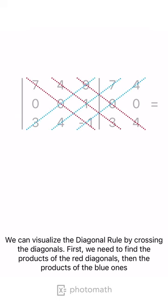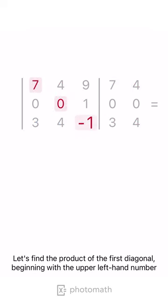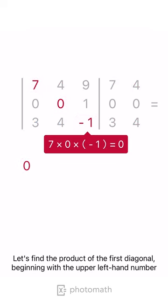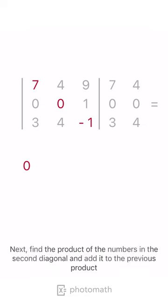Let's find the product of the first diagonal, beginning with the upper left-hand number. Next, find the product of the numbers in the second diagonal and add it to the previous product.